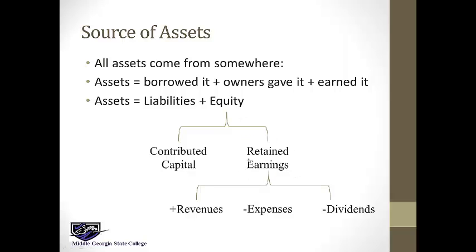Within retained earnings you have revenues less expenses less dividends. Revenues — when you sell to customers — make retained earnings go up. When you use up resources, retained earnings go down. When you return profits to owners, which is what dividends are, retained earnings go down. So retained earnings is impacted by these three things: up by revenues, down by expenses, down by dividends.